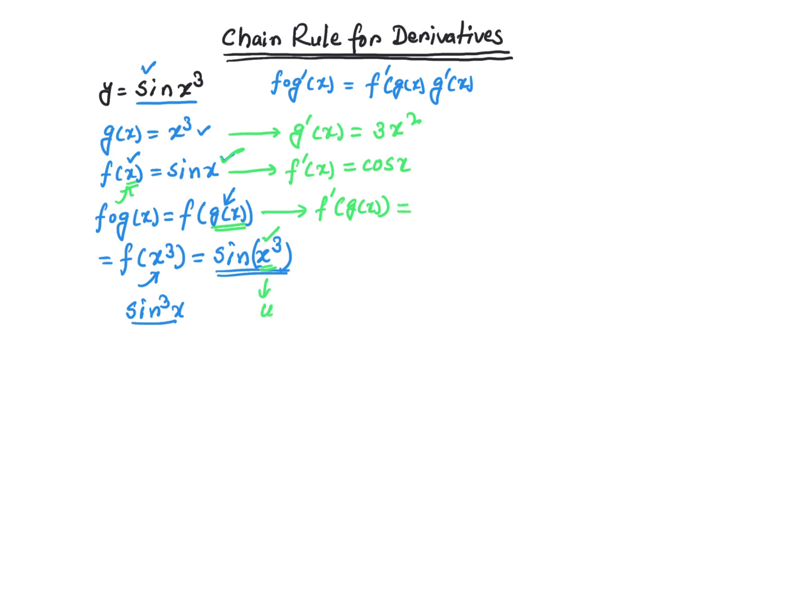So what is going to be the derivative of this? It's going to be just cosine of u. I just introduced another variable. Now, u is actually x cubed, so it's going to be cosine of x cubed.